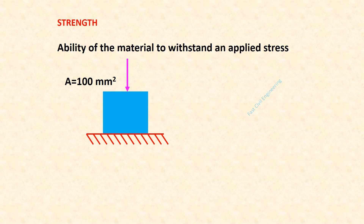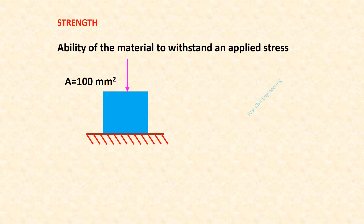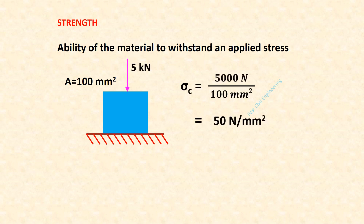See this example: compressive force 2 kN, area 100 mm², therefore compressive stress sigma-c is equal to 20 N/mm². Now change the force to 5 kN, then sigma-c is equal to 50 N/mm².